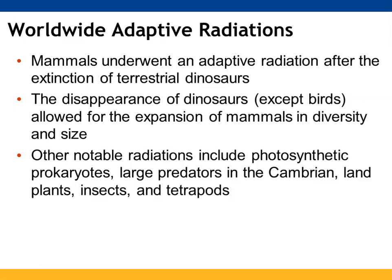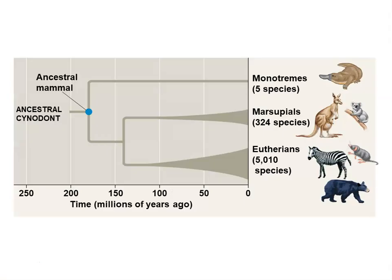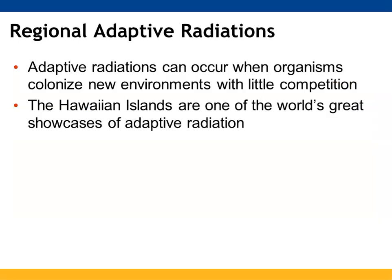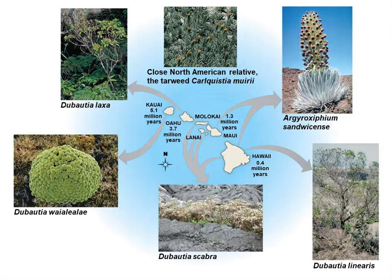Other notable adaptive radiations include photosynthetic prokaryotes, predators during the Cambrian period, land plants, insects, and tetrapods. Adaptive radiation is the evolution of diversely adapted species from a common ancestor, seen after mass extinctions, when new characteristics evolve, or when new regions are colonized. We can also have regional adaptive radiations when organisms colonize new environments with little competition. The Hawaiian islands are one great example, showing all the different species that have been able to adapt to that environment.